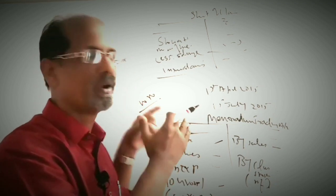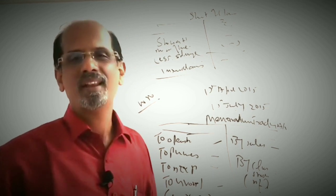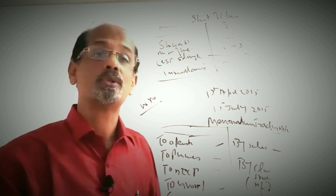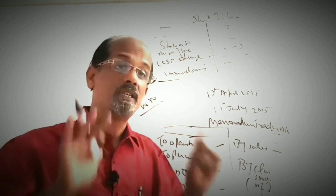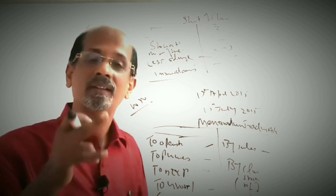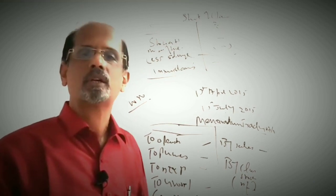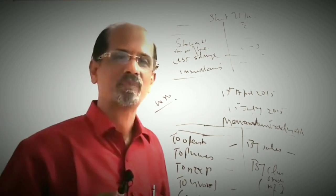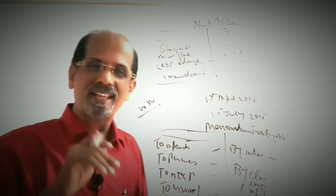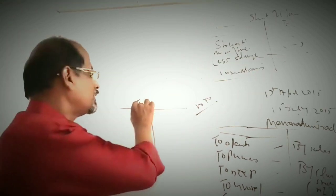This is a summary of two types of problems for calculating an insurance claim. One is where the GP ratio is given, and the other is where the GP ratio is not given. If the GP ratio is not given, you will be given the opening stock, purchases, direct expenses, sales, and closing stock of the previous year. In that case, you will have to prepare the original trading account of the previous year as a working note.